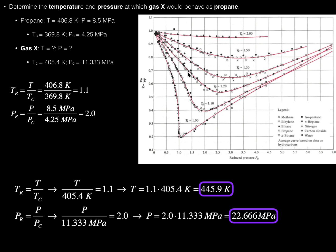We could go to the graph — though we don't need to in this problem — to the reduced pressure of 2 up to the 1.1 reduced temperature isotherm and interpolate the compression factor of this gas. But this is how you would solve a problem if you want to determine the temperature and pressure at which a particular gas would behave the same as a gas for which you already know everything.